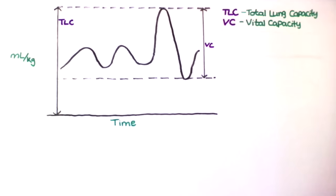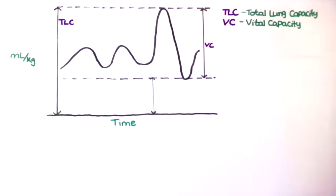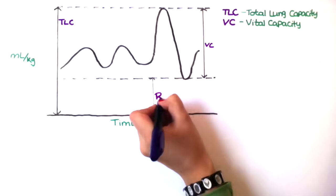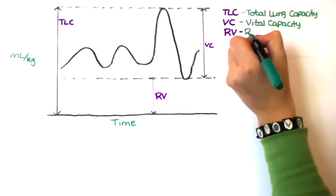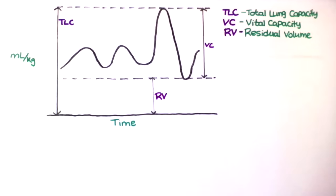So what you do is take a deep breath all the way in and then blow it all the way out — that would be your vital capacity. The residual volume is the amount of gas remaining in the lungs after a maximal expiration.